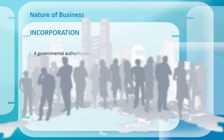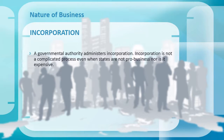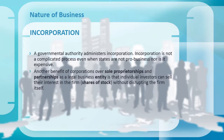Incorporation: a governmental authority administers incorporation. In the United States, incorporation is a state process, not a national or federal process. States have varied incorporation requirements, with some states being pro-business while others are more interested in protecting investors and keeping a close watch over firms. Incorporation is not a complicated or expensive process. Once incorporated, the firm assumes the legal status of an individual, providing the owners or executives personal protection. Another benefit of corporations over sole proprietorship and partnerships is that individual investors can sell their interest in the firm — shares of stock — without disrupting the firm itself.